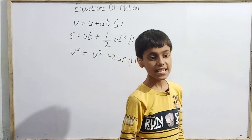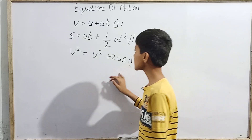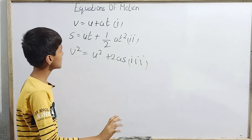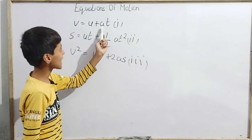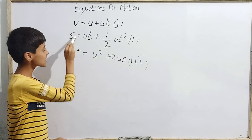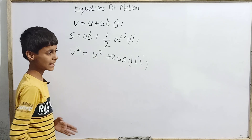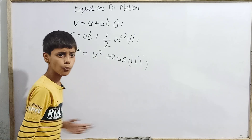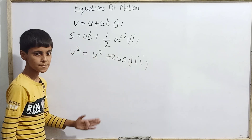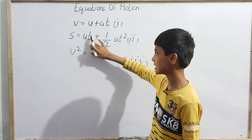Let me define the terms: v is final velocity, u is initial velocity, a is acceleration, and t is time. Here, s is the displacement of the particle — not the distance covered by the particle. But if we have motion in one dimension, and a question asks us to find displacement when initial velocity, time, and acceleration are given — how do we find distance?